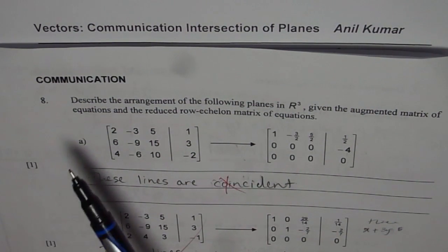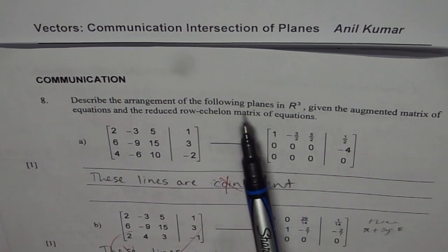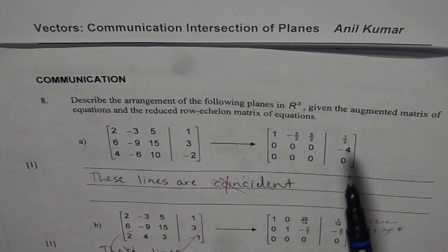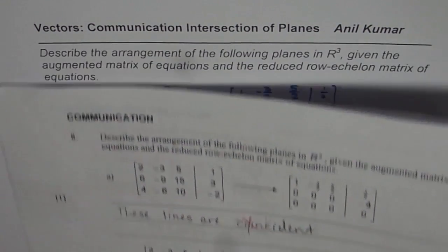Now let me take up the very first part of question 8 which is describe the arrangement of the following planes in R³ given the augmented matrix of equations and the reduced row equivalent matrix of equations. Now let's look into it in greater details.